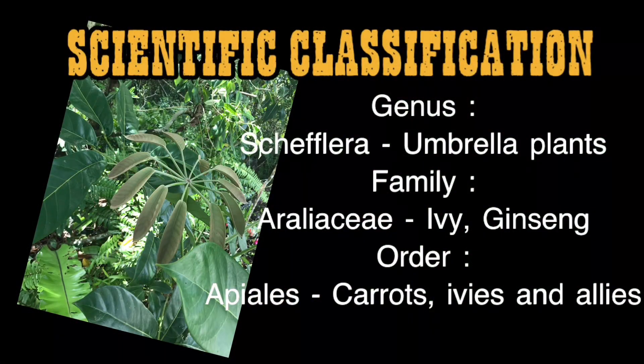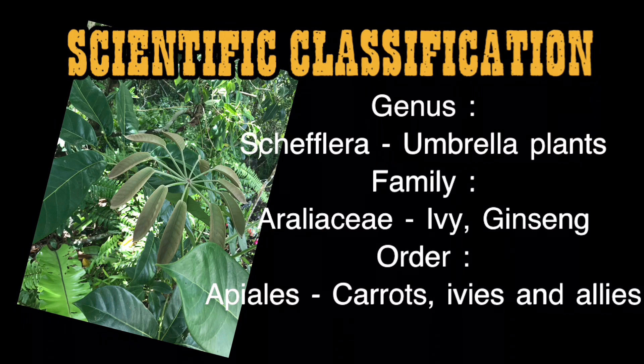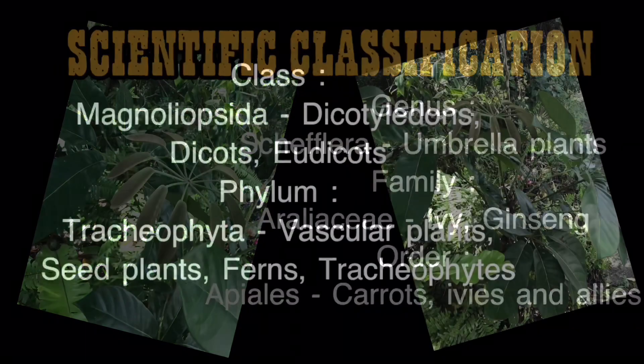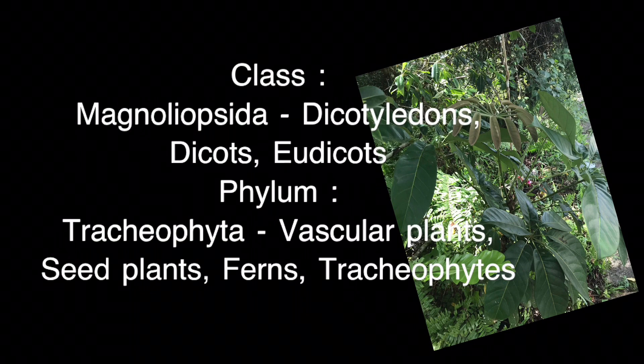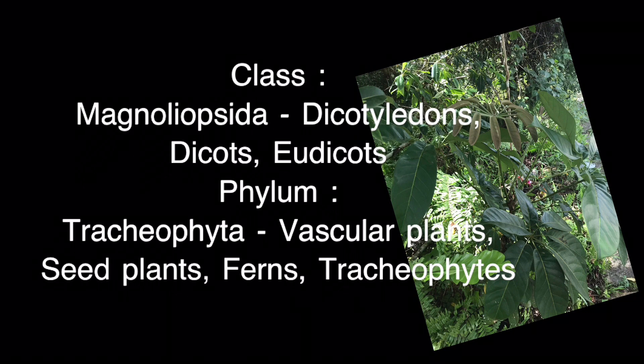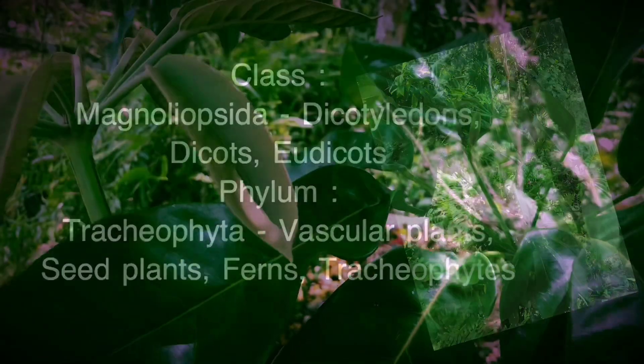Scientific classification: Genus — Schefflera, umbrella plants. Family — Araliaceae, the ivy, ginseng, and allies family. Class — Magnoliopsida, Dicotyledons. Phylum — Tracheophyta, vascular plants, seed plants, and tracheophytes.